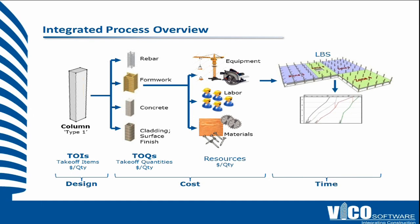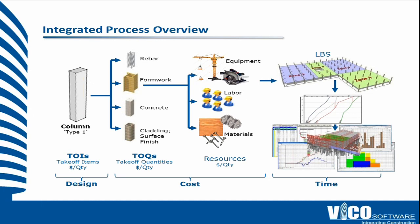We then use those quantities by location to drive the schedule. And as a result of putting logic between the tasks, we get all of the byproducts from this process - the resulting schedule, which we can view and optimize. We use a location-based method which enables us to see all the place and have opportunities to optimize resources and force continuous work. We get the cash flow profile because we have the cost broken into different locations over time, and we also get resource demands for labor and procurement for material demands as well.